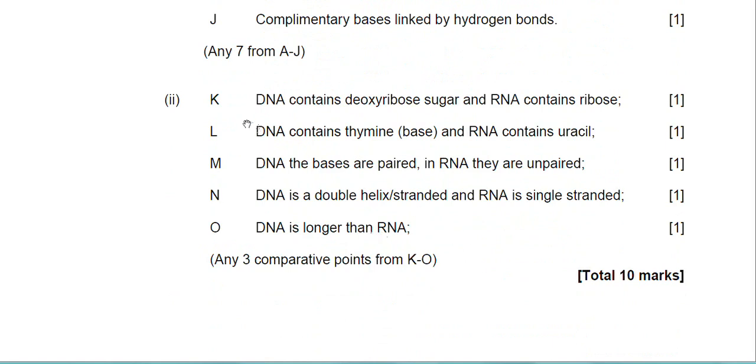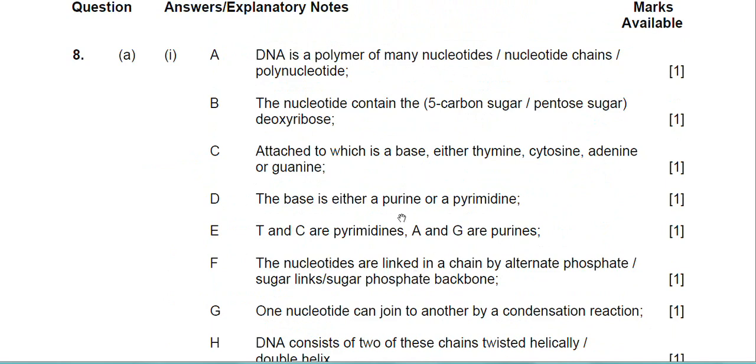Part two then. Straightforward enough, the differences there between DNA and RNA. I think the only one I didn't write in my answer was marking point M there. DNA, the bases are paired. In RNA, they are unpaired. Of course, that's because RNA is single-stranded, which I did mention. I mentioned marking point M. So that's question eight done on DNA. In the next video then, we'll tackle the second essay.